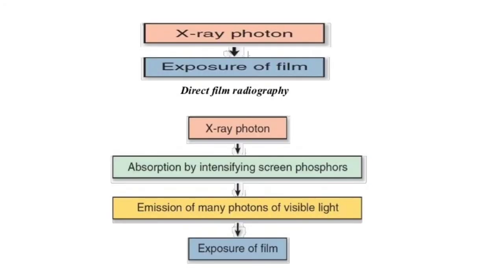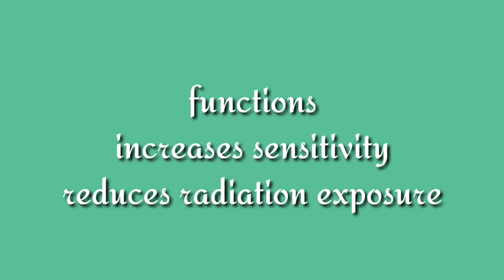Moving on to the mechanism of action: unlike direct film radiography, here the X-ray strikes the intensifying screen, which then converts the X-ray into multiple visible rays. This visible light strikes the X-ray film and forms the image with less exposure. The main function of the intensifying screen is to increase sensitivity and reduce radiation exposure.